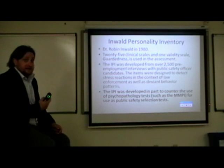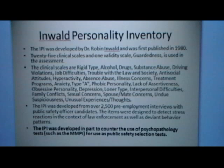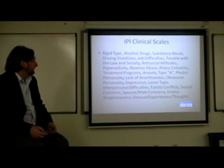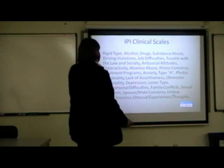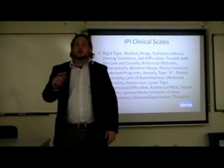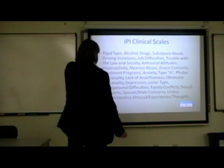The relevant scale here is the Inwald Personality Inventory, or IPI. It's specifically designed for the selection of public safety officers. It was developed by Robin Inwald in 1980 and was designed to counter the use of the MMPI for public safety officer selection. Its scales are related to areas of difficulty that police officers might have that could ultimately lead to their dismissal.